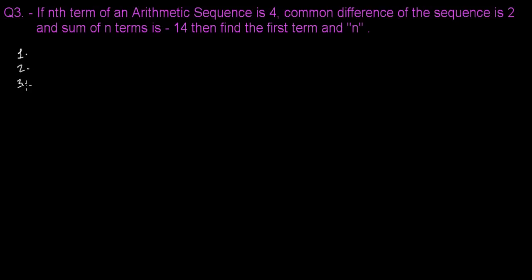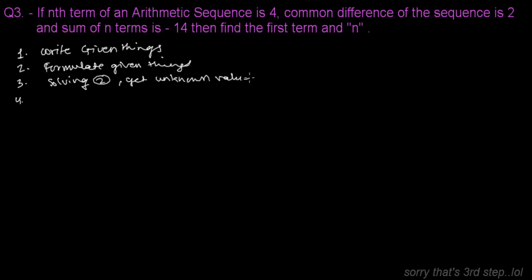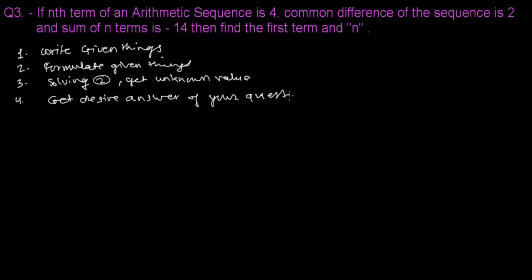I have told you the four steps. First step: write the given things — always write the given things. Second step: formulate the given things. Third step: solve to get the unknown value. Fourth step: give the solution — get the desired answer of the question. We're going to solve every question following only these four steps.